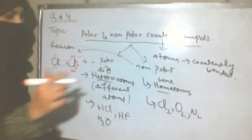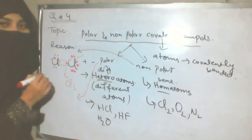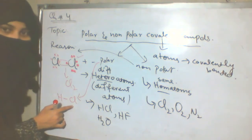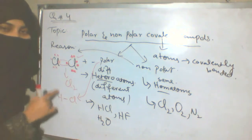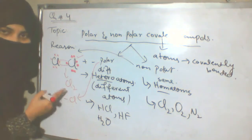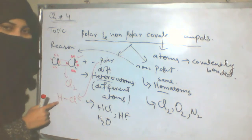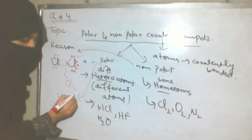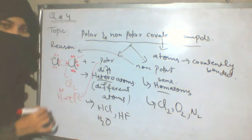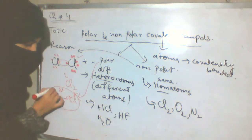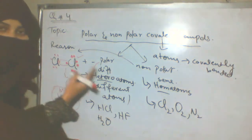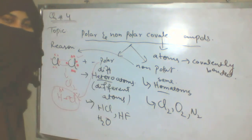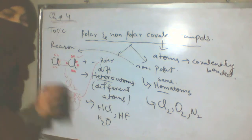Now, why is HCl a polar bond? The bond is between H and Cl. H has 1 electron and Cl has 17 electrons. Because of this difference, the covalent bond becomes a polar covalent bond. This is the reason that these are polar and non-polar compounds.